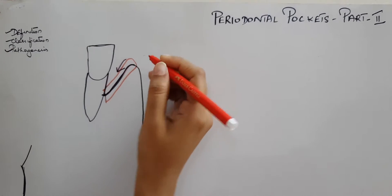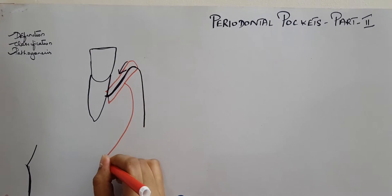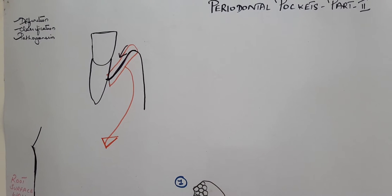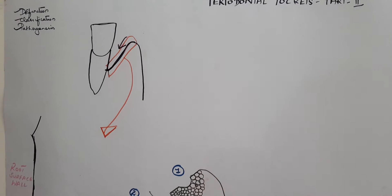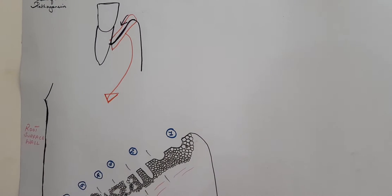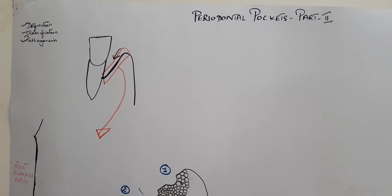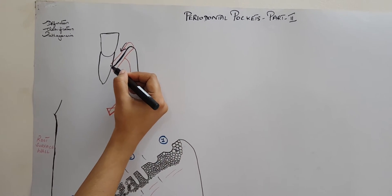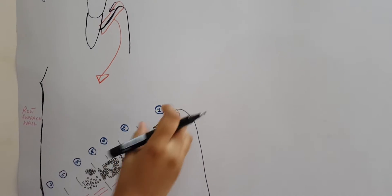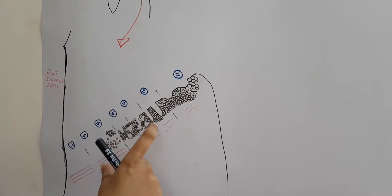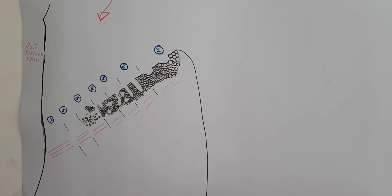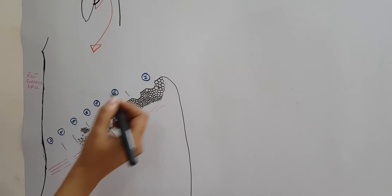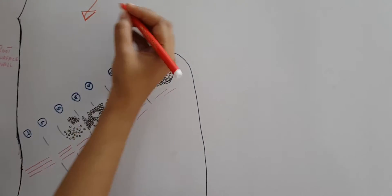So now let's look at the surface changes in the gingival wall which happen after the pocket is formed. Many scanning electron microscopic studies have been done, and they found more than seven areas where changes can take place in this pocket wall. We will look at each area in detail. These areas can be found adjacent to one another, each with a thickness of 50 to 200 micrometers.